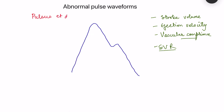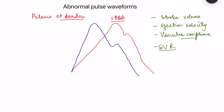Next is pulsus tardus, meaning a slowly rising pulse. The peak height is the same but the upstroke is slow. One example is left bundle branch block, where the whole ventricle does not contract together, so the force generated is not maximal — the force builds slowly — though the eventual peak remains the same.